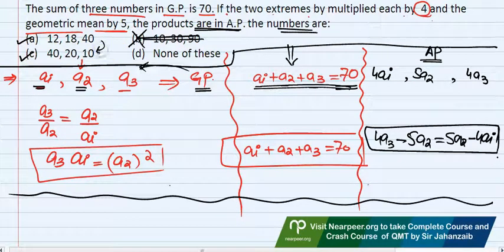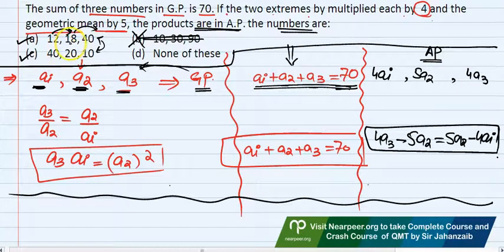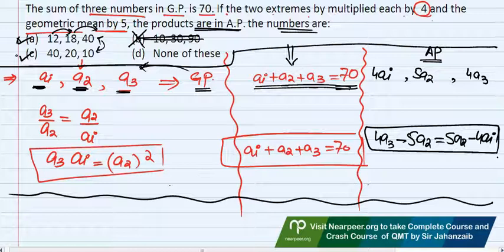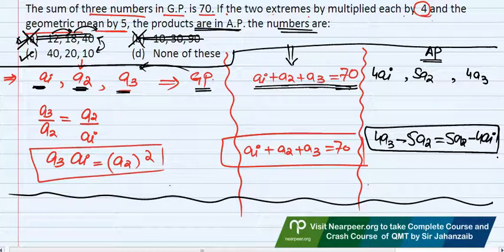Option C sum equals 70, so option A or C. We checked only one condition and eliminated 2 out of 4 options. Option B is eliminated. Now the competition is between A and C.